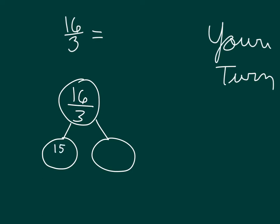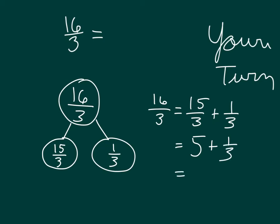How many thirds did you start with? Did you go 15 thirds? 15 thirds and how many more thirds? 1 third more. So we have 16 thirds equaling 15 thirds plus 1 third, which we can rewrite as how many wholes? Right, 5 wholes plus 1 third. So 16 thirds is equal to 5 and 1 third. Check over your work.